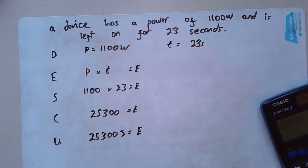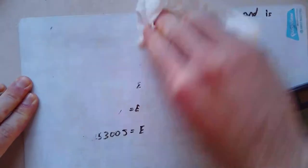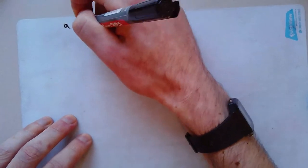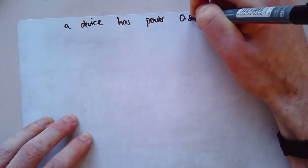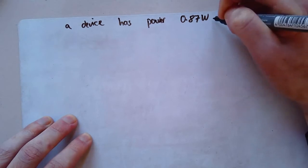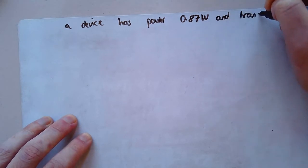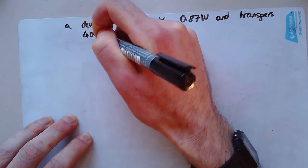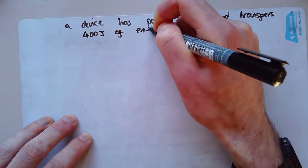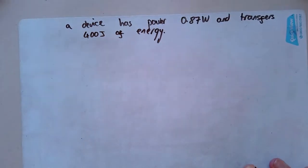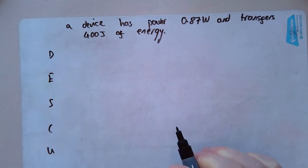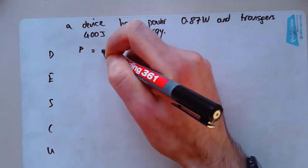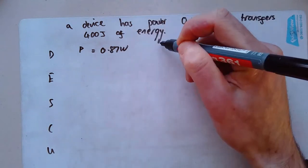Let's take one more example that's got a rearrangement in it. So let's say I've got the device has power 0.87 watts and transfers 400 joules of energy. The question would be, how long did that take? So again, I write down my D, E, S, C, U, data. D stands for data, which is power P equals 0.87 W. I've got my energy as well. E equals 400 joules. Equation as before, P times T equals E.